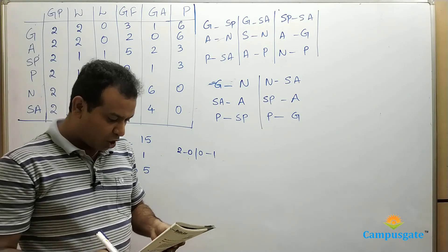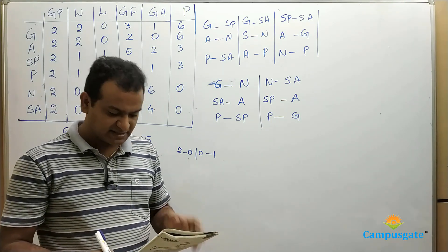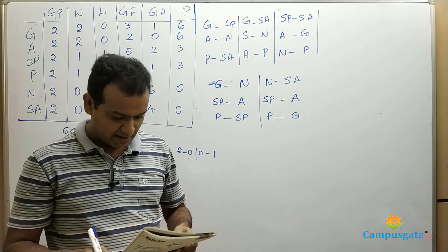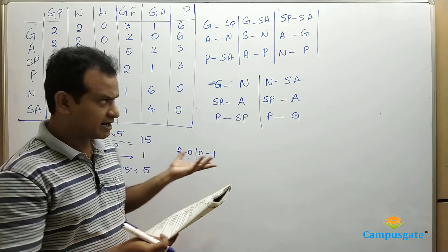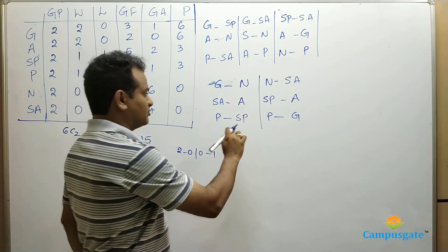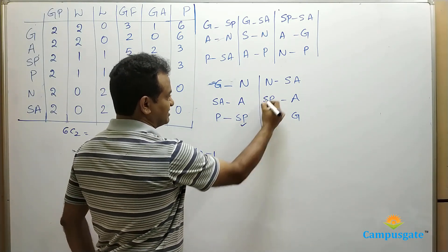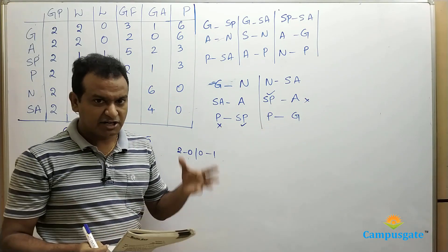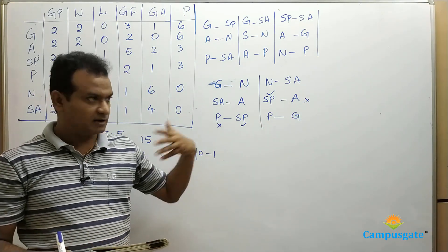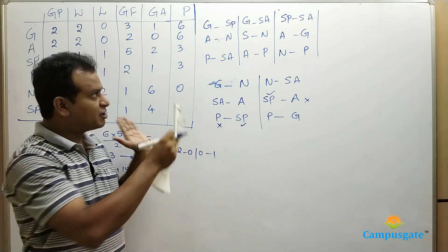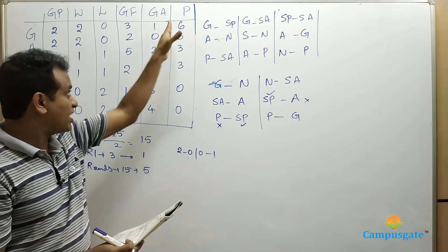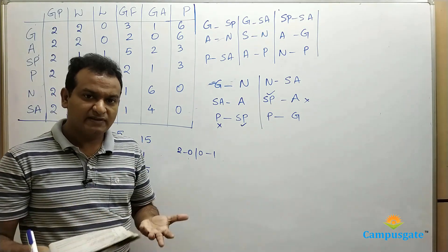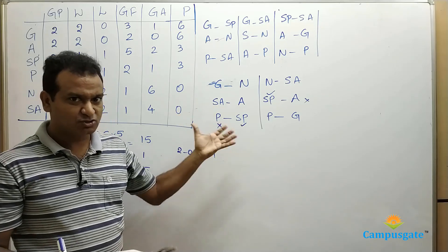According to the question, all third-round matches ended in draws, giving every team 1 point from round 3. From the given round 4 and 5 data — for example, if Spain won both matches — you can deduce which teams lost in those rounds, compile the updated points table, and answer the remaining questions. This is the complete method for solving this type of CAT tournament scheduling problem.